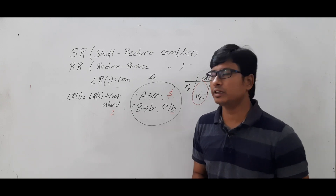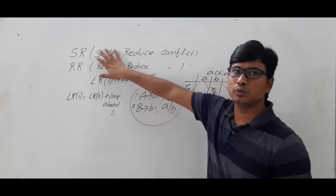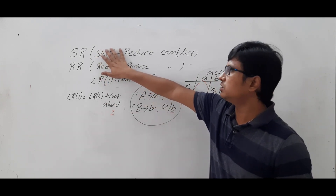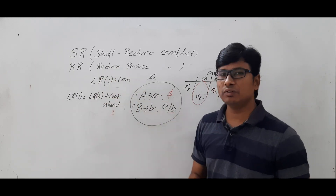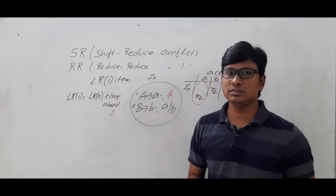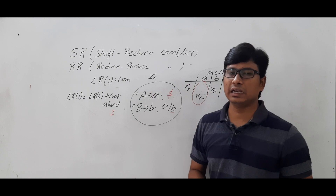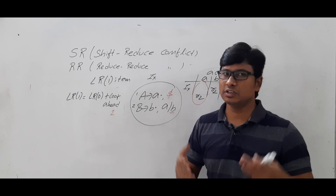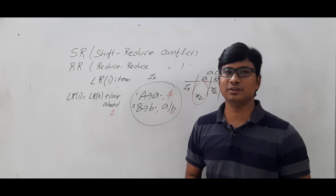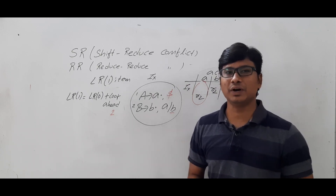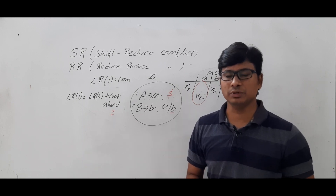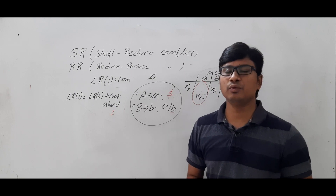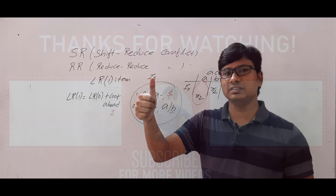I hope with these examples you have understood what is shift-reduce conflict, what is reduce-reduce conflict, and how they arise in LR0 and LR1 items. If you still have any doubts related to this concept, feel free to ask me in the comment section. I will try to clear your doubts as early as possible. Thank you for watching, have a nice day.